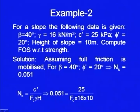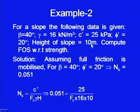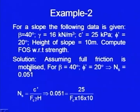Let us have one more example. For a slope, the following data is available: slope angle β = 40°, γ = 16 kN/m³, c' = 25 kPa, φ' = 20°, height of slope is 10 meters, and we have to compute the factor of safety with respect to strength. Factor of safety with respect to strength means F_s, which is that value of F where F_c and F_φ are both equal. So let us first assume full friction is mobilized; this is our first trial.